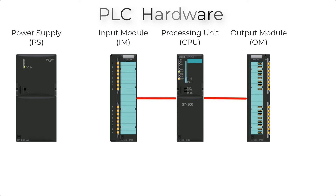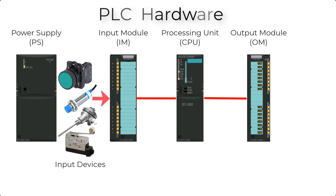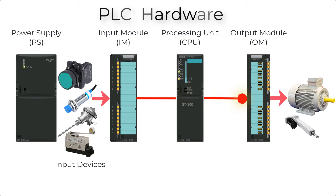This isolation provides safety to the CPU. The input module is connected with switches, sensors, transducers, and other input devices. It receives input from input devices and sends this input to the CPU. The CPU reads this input, compares it to the program saved in its memory, and gives the output signal to the output module after logical decisions.